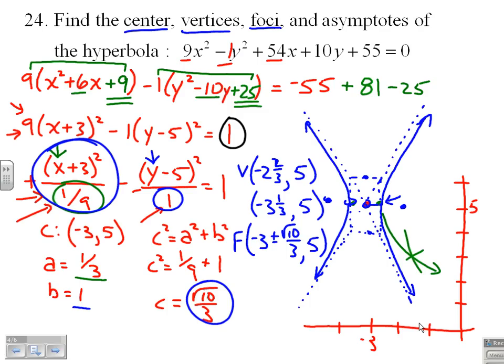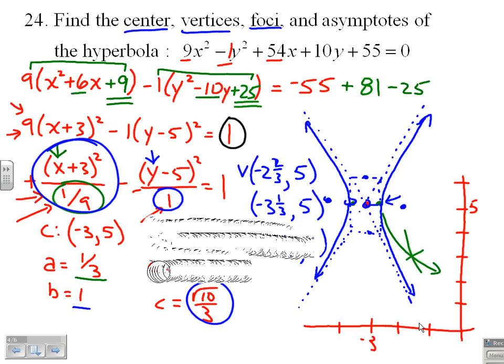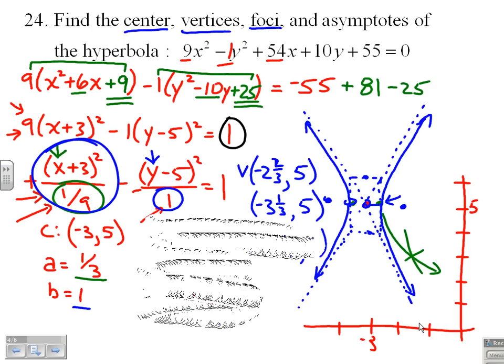So, let's see what we've got. I've got a center, vertices, foci, my graph. I need my equations of the asymptotes. I'm going to go ahead and fight through the mess on this.